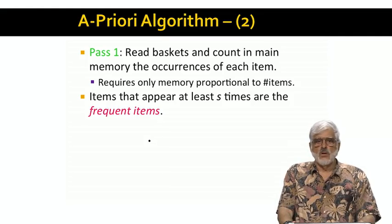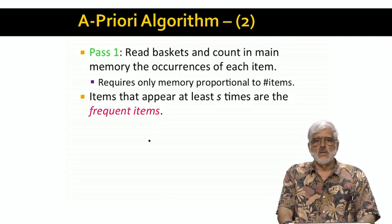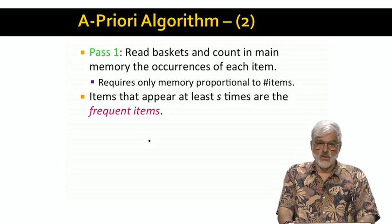Incidentally, if all we want is to tell whether or not an item appears s or more times, then it is sufficient to count up to s, and not add ones beyond that. So if, say, s is 10,000, then we only need to keep two bytes per count, regardless of how many times items might appear in the data.